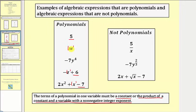Notice how the remaining terms are the product of a constant and a variable with a non-negative integer exponent. So w equals one times w to the first, negative seven y to the fourth equals negative seven times y to the fourth, negative z equals negative one times z to the first, two x squared equals two times x to the second, and x equals one times x to the first. Notice all the terms fit into these two categories.